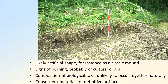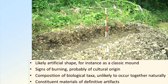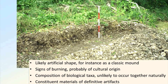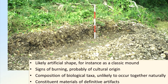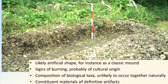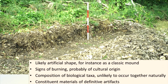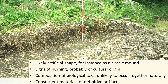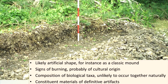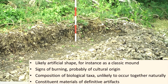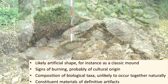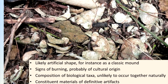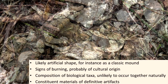The surrounding contexts can offer clues about a natural versus cultural origin. For instance, the classic mound shape of a midden is unlikely to occur naturally. Burned or charred material offers another indicator of a probable cultural origin. The represented biological taxa could reveal multiple habitat sources or seasonality, either unlikely or impossible to occur together naturally. Additionally, constituent materials of definite artifacts tend to be the most convincing evidence of a culturally created midden.